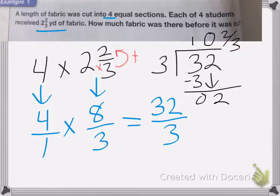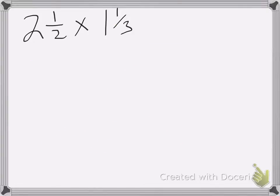So the fabric was ten and two-thirds yards long. All right. So now I have this problem: two and one-half times one and one-third. So again, I need to change these to improper fractions.